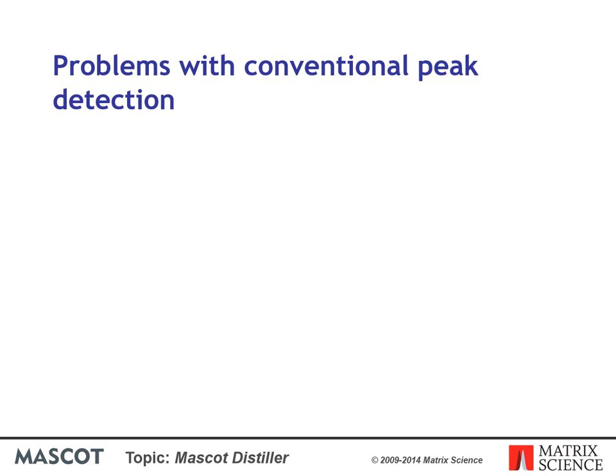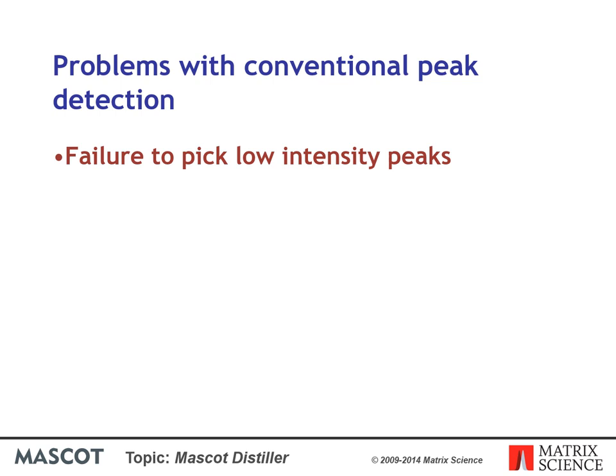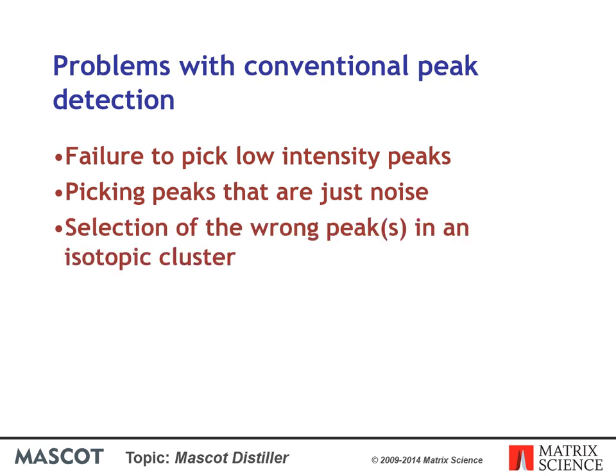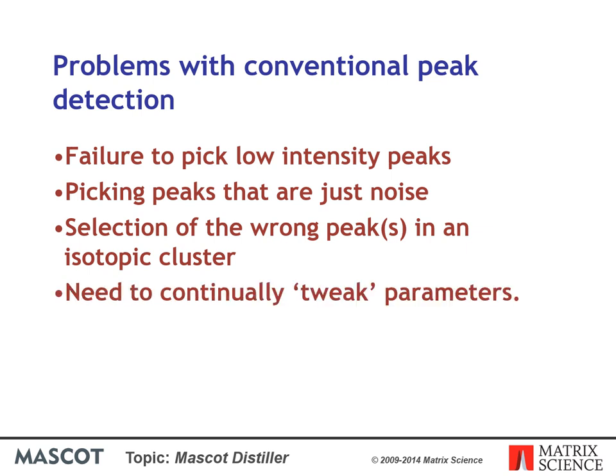So what is different about peak picking in Mascot Distiller? Conventional peak detection works by smoothing the spectrum, then looking for a rising gradient at the onset of a peak and a falling gradient at the tail. The trouble is, this only works well if various parameters are set just right for the particular spectrum. If these parameters are not right, we see either a failure to pick low intensity peaks, or picking of peaks that are just baseline noise. Another common problem is selecting the carbon-13 peak instead of the smaller carbon-12 peak, so that the mass is out by a full Dalton. The need to continually tweak parameters is a big headache if you want to process files automatically without looking at each spectrum.